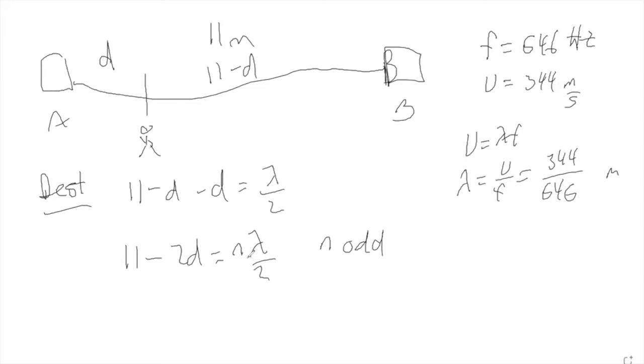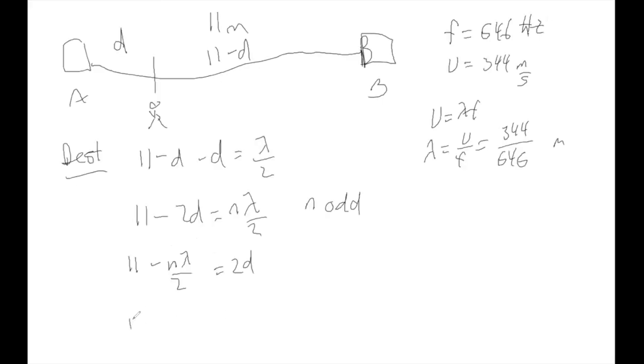So the way to do this problem is to solve it by keep plugging in bigger and bigger n's here until we end up with a negative d, and then we know we went too far. So we would, here, let's say 11 minus n lambda over 2 equals 2d. 11 over 2 minus n lambda over 4 equals all my different d's. We get a whole bunch of different d's, and here's lambda right here, and we keep plugging in bigger and bigger values of n until we find the biggest n that works without making this thing negative, and then that's our smallest distance. That's the closest to A we can get. Okay, so let me show you this in a calculator.